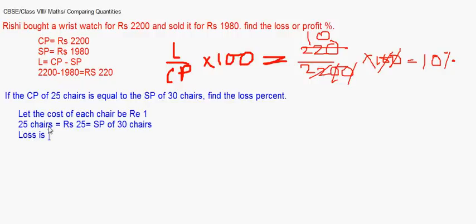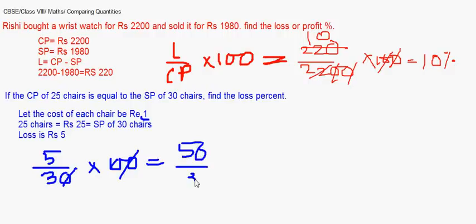So the loss is 30 minus 25, that is Rs 5. Now to convert into percentage, what is the cost price of those 30 chairs? We had taken it to be 1, so the cost price of 30 chairs will be 30. So it is 5 by 30 multiplied by 100, giving me 50 by 3. If I divide, I'm getting 16.666, so I'm making it 16.7% by rounding off.